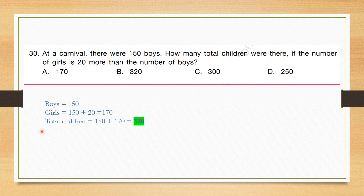Question number 30: At a carnival there were 150 boys. How many total children were there if the number of girls is 20 more than the number of boys? Number of boys is 150, so number of girls = 150 plus 20 = 170. Total children = 170 plus 150 = 320. Correct answer is option B, 320.